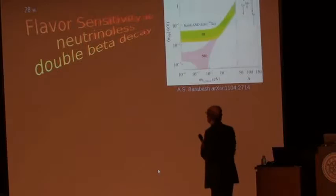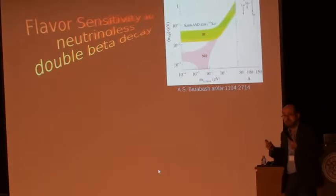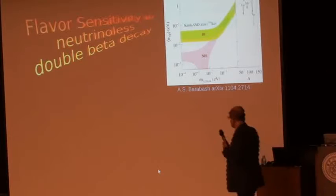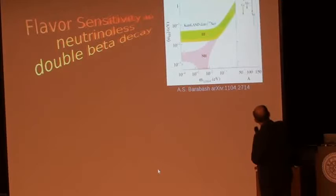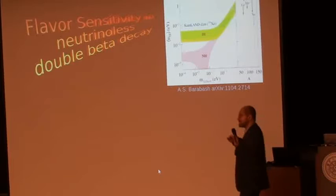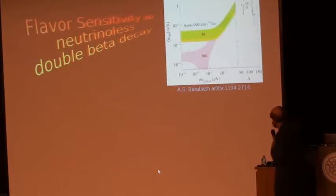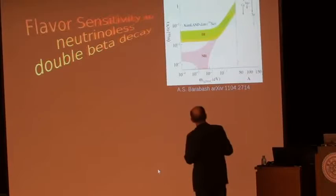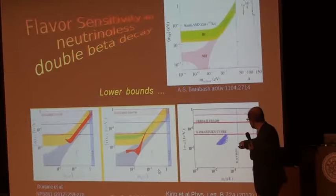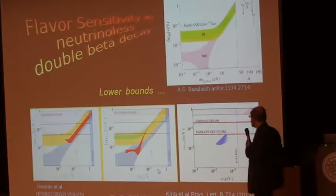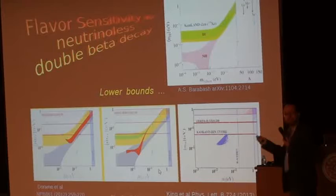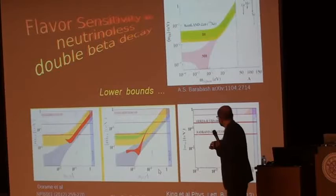Another comment about flavor is that neutrinoless double beta decay is just a test of total lepton number violation, but it has some flavor sensitivity. I mentioned before already that you have these two bands with the experimental sensitivity there. What happens is that if you have a very predictive flavor model, you do not cover the whole generic bands associated to normal and inverse hierarchical spectra, you cover only a sub-band, for example in red. You see that more often than not, one finds that these flavor-based models yield what are called, in technical terms, neutrino mass sum rules, or in more practical terms, lower bounds for the allowed neutrinoless double beta decay rate, which is of course encouraging for the experiment.